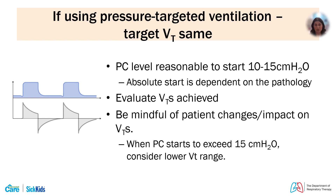If using a pressure-targeted ventilation mode, the tidal volume target and how you set your pressure control follows the same logic as volume-targeted mode. It is reasonable to start pressure control anywhere from 10 to 15, depending on the pathophysiology. Look for chest rise initially, then evaluate tidal volumes on the ventilator. Be mindful of patient changes, particularly changes to sedation, which can impact delivered tidal volumes. When pressure control starts to exceed 15, consider moving to the lower range of 4 to 6 mL/kg.